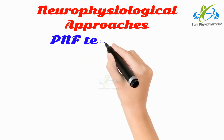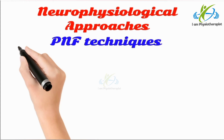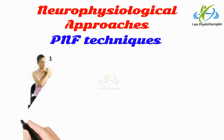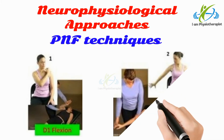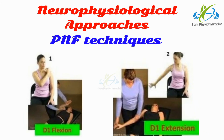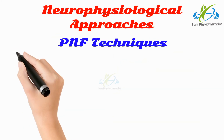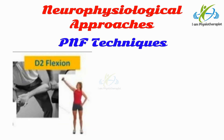Proprioceptive neuromuscular facilitation (PNF) patterns are used for the upper and lower extremities and are broken into diagonal 1 and diagonal 2 patterns. For upper extremity, D1 flexion includes shoulder flexion, adduction, and external rotation, forearm supination, wrist radial deviation and flexion, and fingers flexion. D1 extension includes shoulder extension, abduction and internal rotation, forearm pronation, and wrist ulnar deviation.